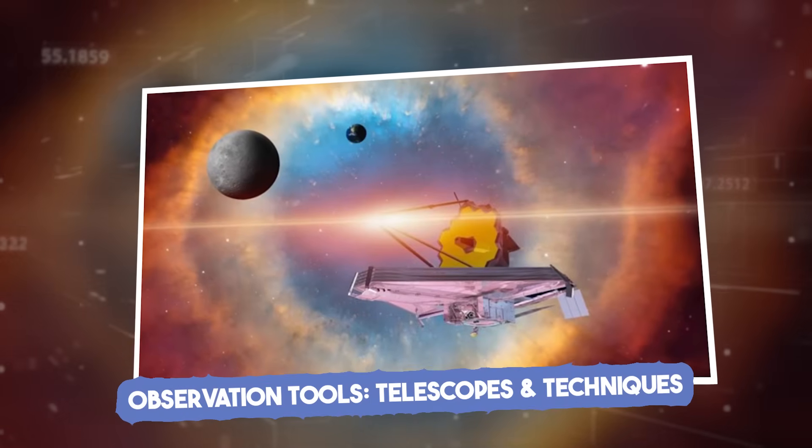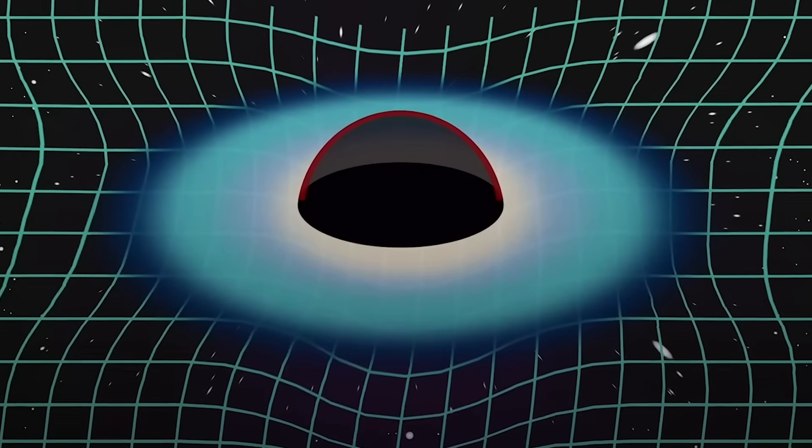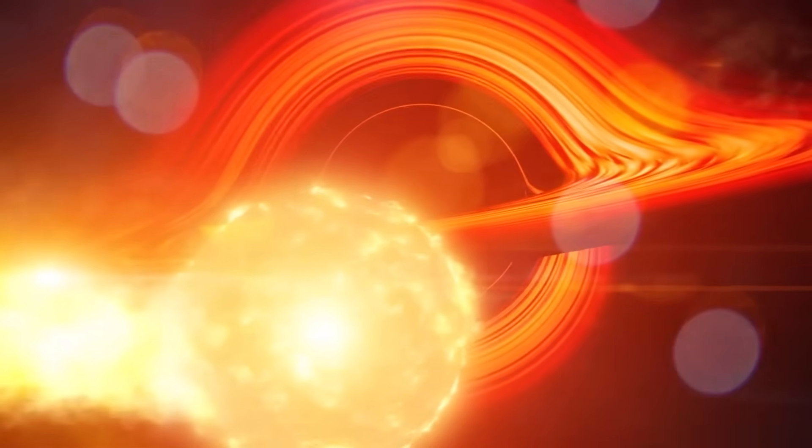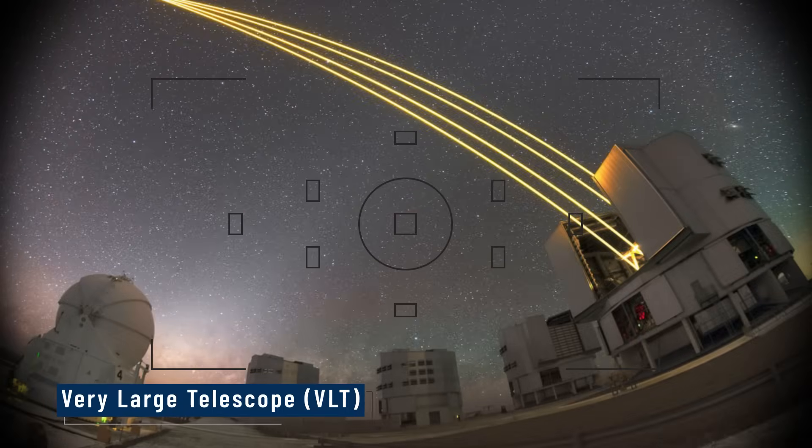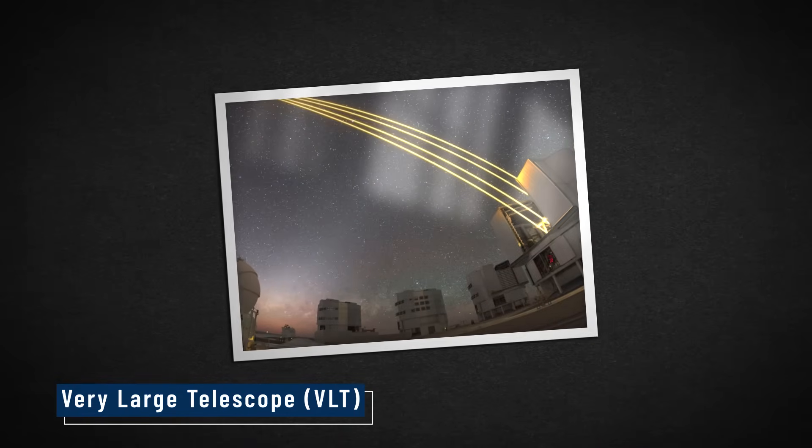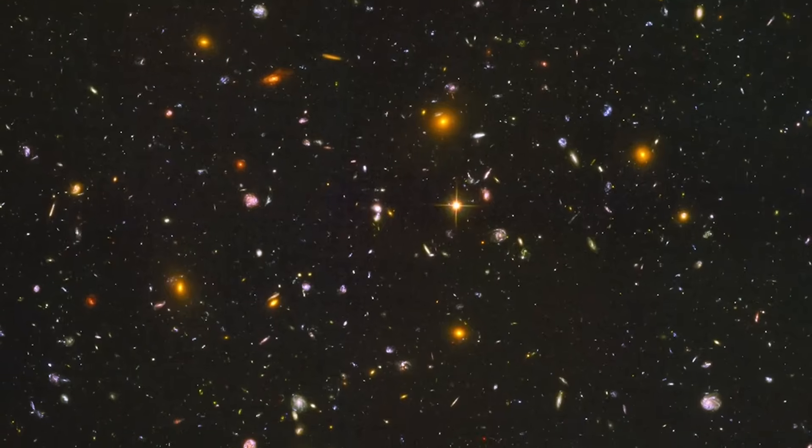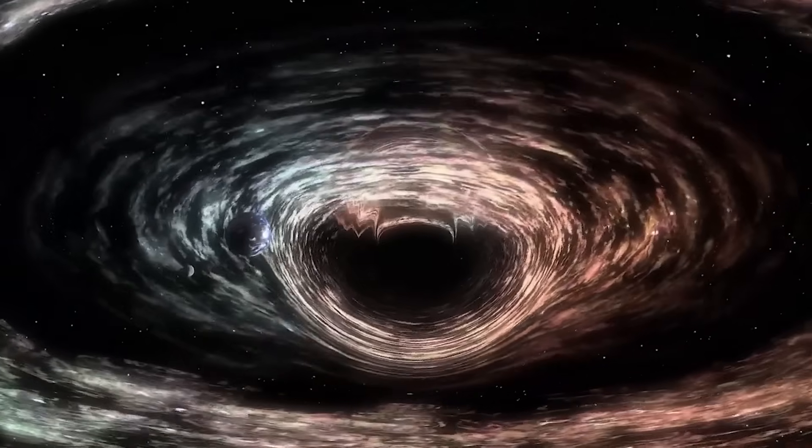Observation tools, telescopes, and techniques. To learn what's really inside a black hole, we can't just fly in. We have to watch from a distance. Thankfully, modern astronomy gives us powerful tools. One of the most important is the Very Large Telescope, VLT, in Chile. It watches how stars move around our galaxy's black hole, Sagittarius A. The way these stars orbit helps scientists figure out the black hole's mass and pull.